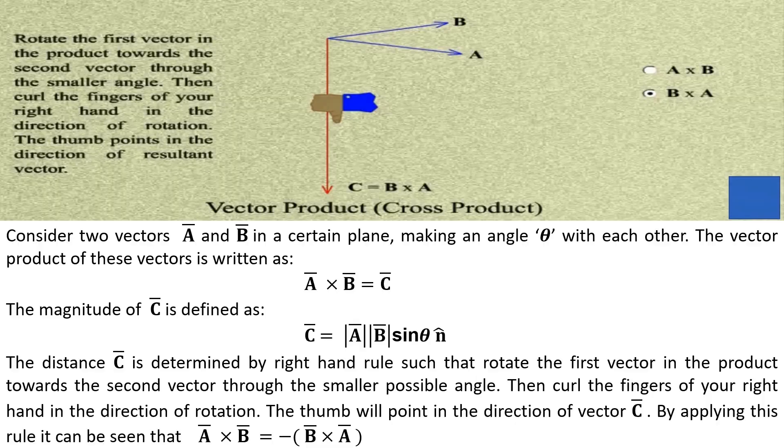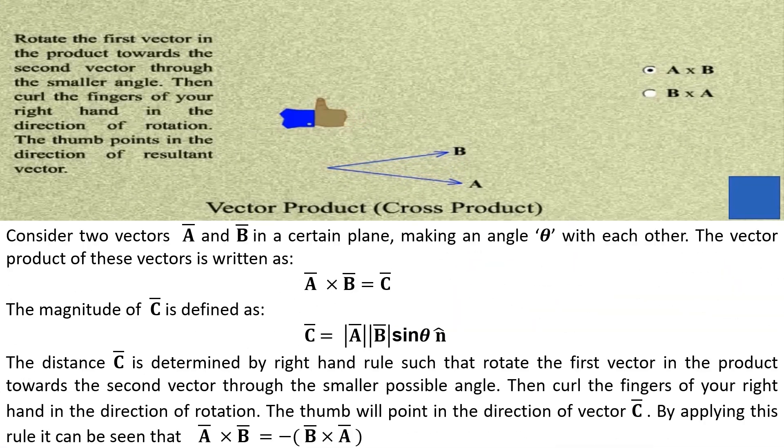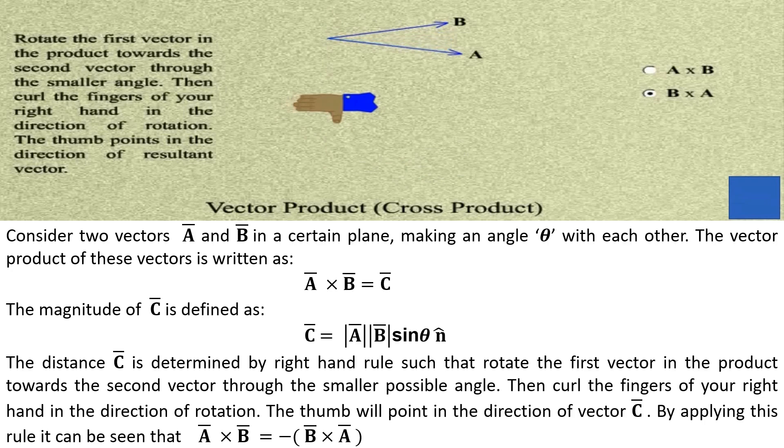Rotate the first vector in the product towards the second vector through the smaller angle. Then curl the fingers of your right hand in the direction of rotation. The thumb points in the direction of the resultant vector.